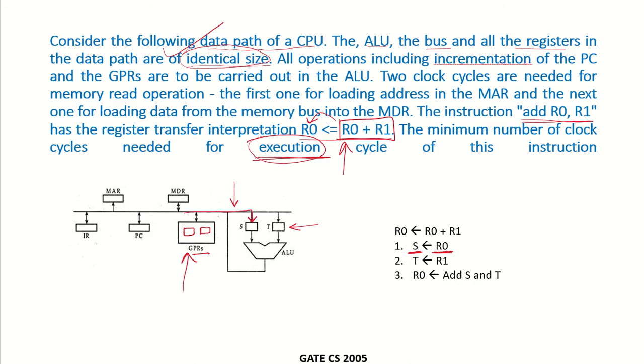In the same cycle we cannot bring data from R1 because this is a single bus organization. Had this been a multiple bus organization, we could have transferred data from both registers in one go. But since this is a single bus, we will have to go one cycle each.